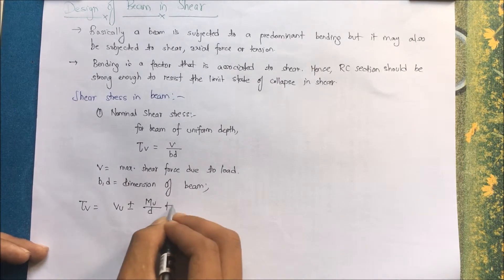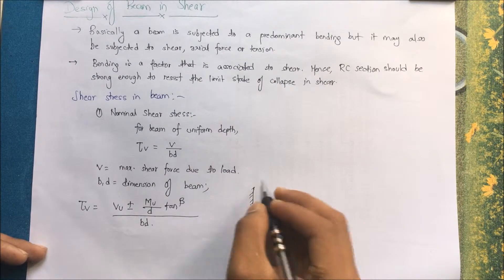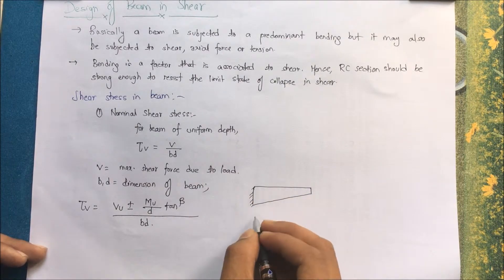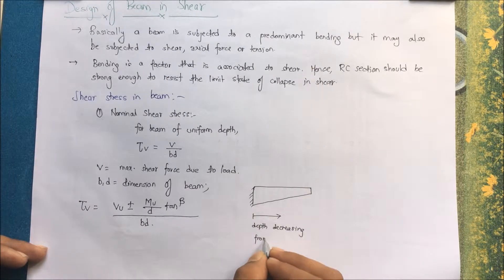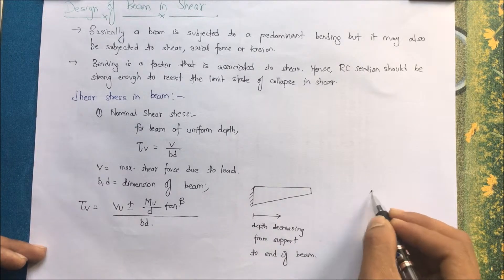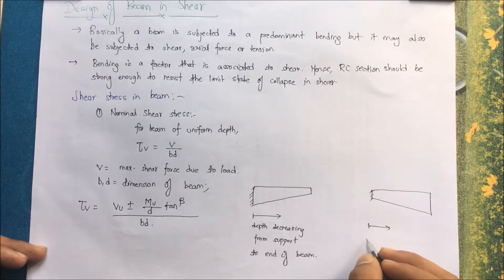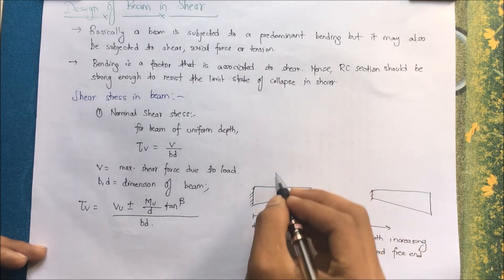For a beam of varying depth, shear stress is equal to (Vu plus or minus Mu/D × tan β) divided by BD. Let us draw a section of varying depth — one case where the depth decreases towards the free end from the support, and another case where the depth increases towards the free end from the support.